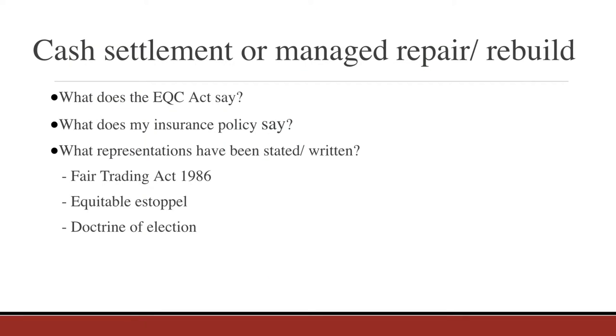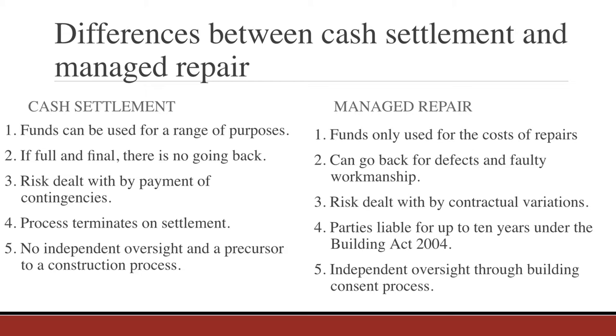There are a number of causes of action you can rely on. One is Section 9 of the Fair Trading Act 1986, which says no person in trade may engage in conduct that is misleading or deceptive — you can't say one thing and do another. Equitable estoppel is another, but that relies on there being an unequivocal representation, which is a little more difficult to prove. If there has been a clear statement that there will be a managed repair, an insurer or EQC cannot cash settle halfway down the process. The doctrine of election also applies where EQC or the insurer has applied for building consent with the intention of carrying out the work — they can't then say they're going to cash settle instead.